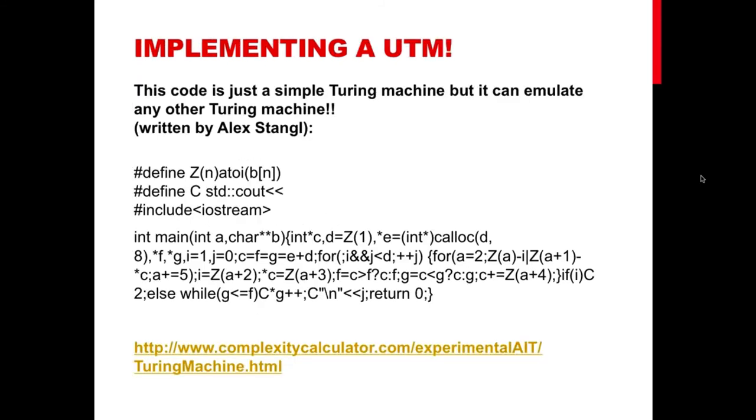So how difficult is to build or actually write a universal Turing machine? Well, it is actually quite easy. Here is an implementation of one in C++ language written by Alex Stengel for a contest that I organized a few years ago. You can see how small it is. Do not try to understand it because the code is quite obfuscated as the contest's purpose was to write the smallest possible Turing machine in every programming language.